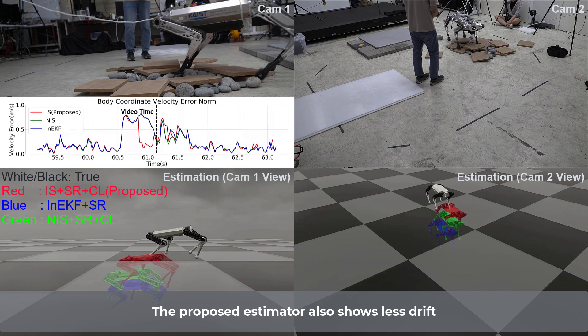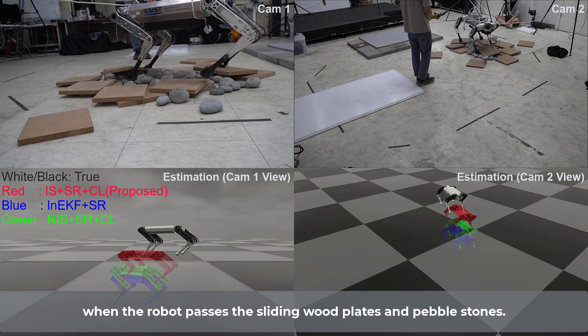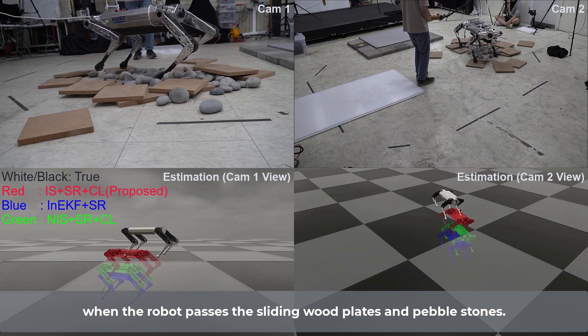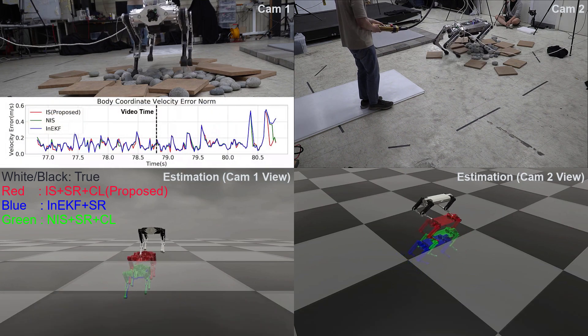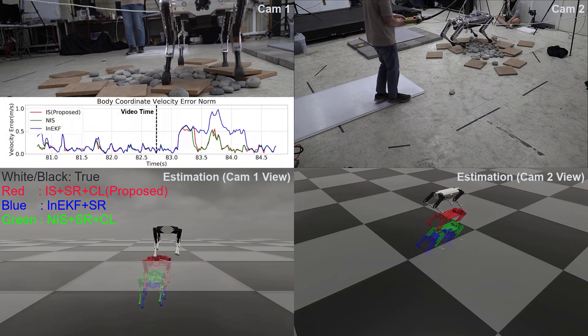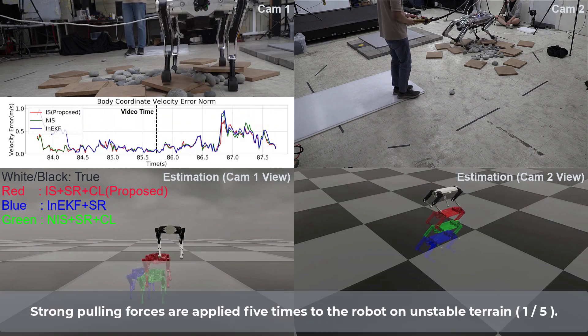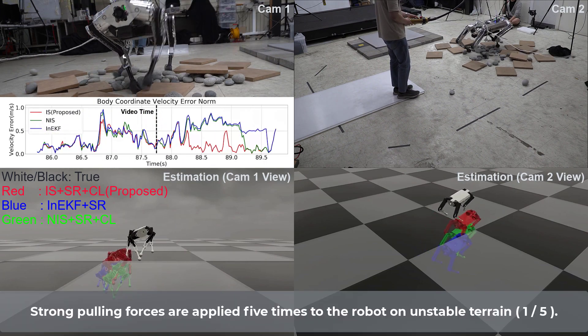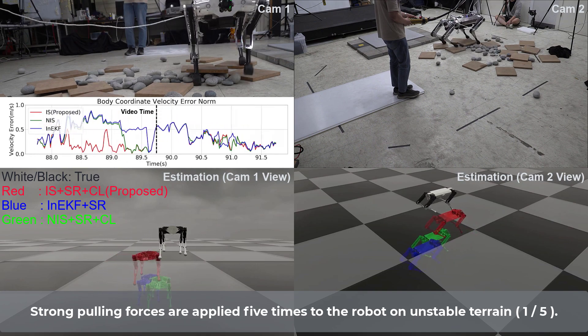The proposed estimator also shows less drift when the robot passes the sliding wood plates and pebble stones. Strong pulling forces are applied five times to the robot on unstable terrain.